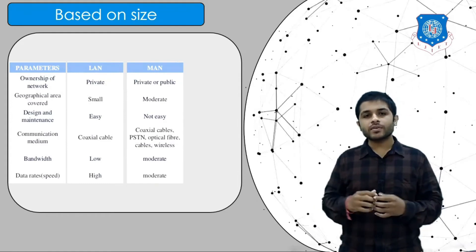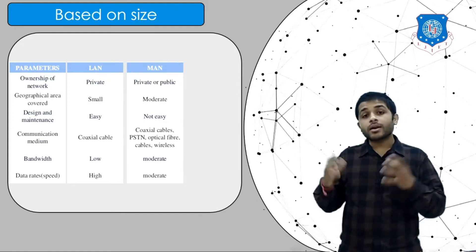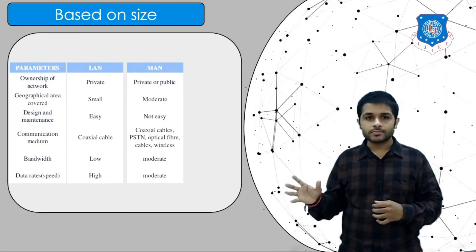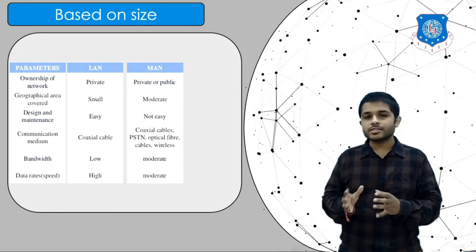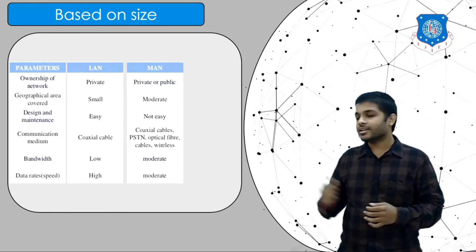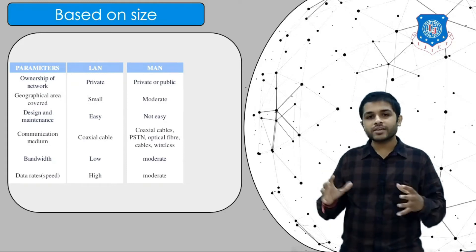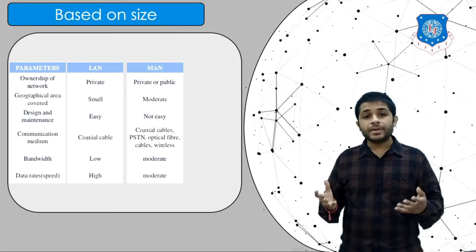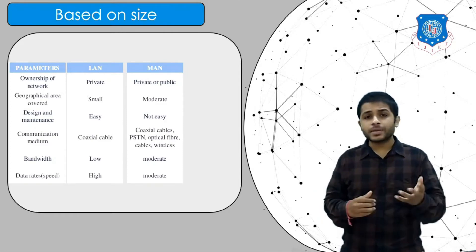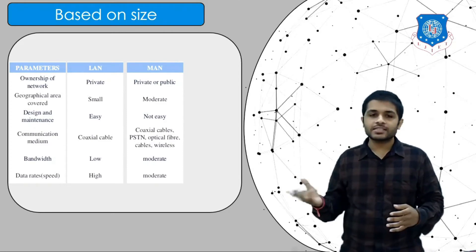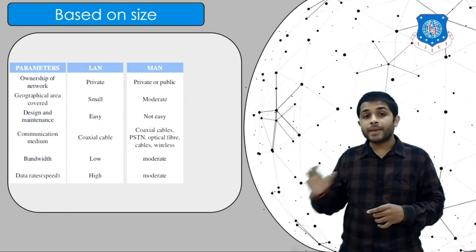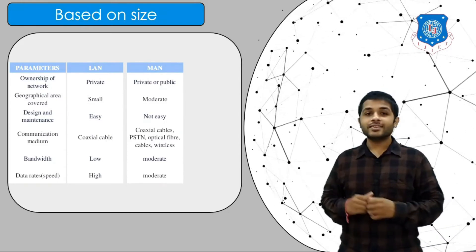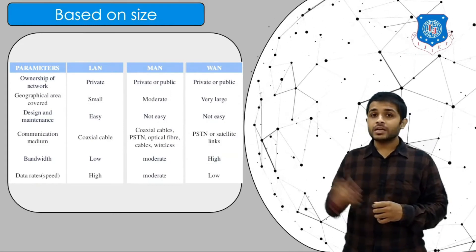The MAN is owned by public or private entities. The area covered is larger than LAN and is moderate. Design and maintenance is not as easy as LAN because the number of devices is more. The communication medium can be coaxial cable, optical fiber, wireless, PSTN, and so on. Both the bandwidth and data rates are moderate.